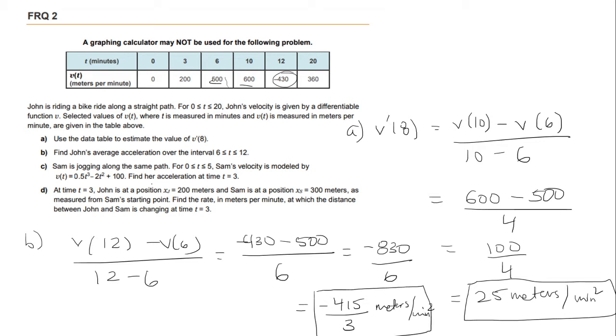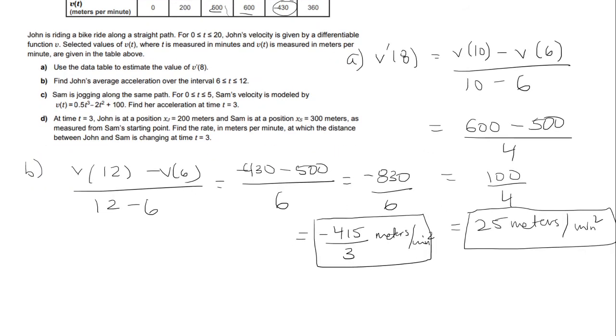Okay for part C we're given the velocity for Sam and we want to find her acceleration at time t equals 3. So in order to find the acceleration you need to find the derivative first. So the derivative is, we're going to bring down the power, so 3 times a half is 1.5 t squared minus 4t. I'm going to plug in t equals 3 now, so it's 1.5 times 3 squared minus 4 times 3. And we get 1.5 meters per minute squared.